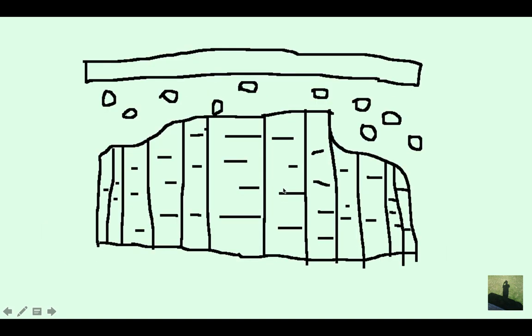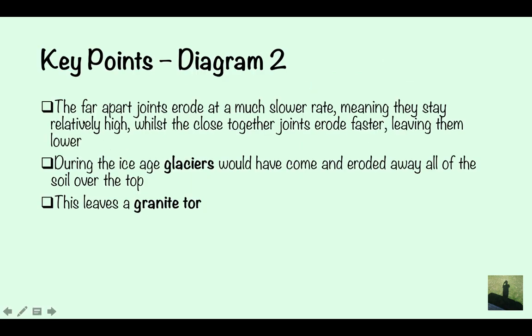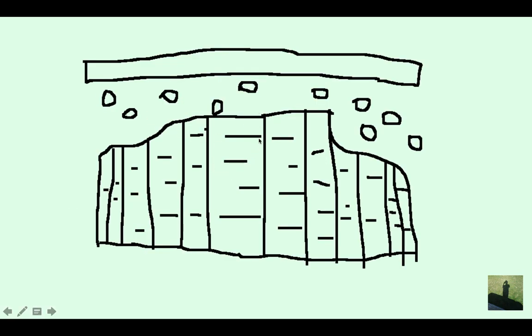So this is the second diagram. The far apart joints erode at a much slower rate, meaning that they are relatively high.